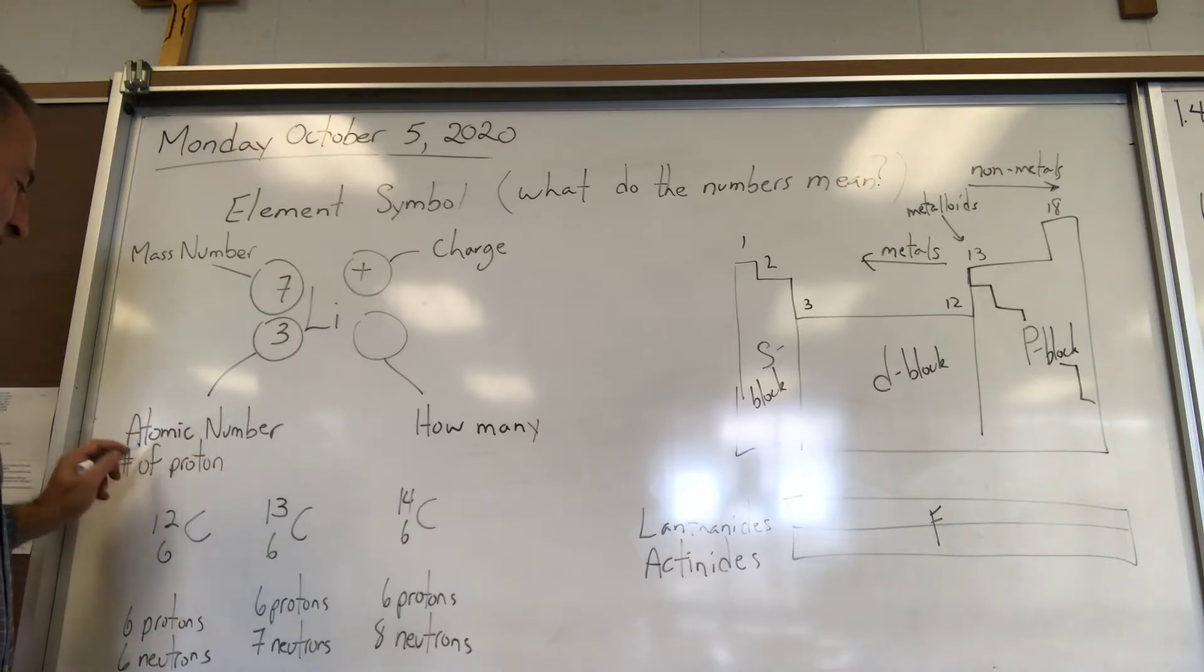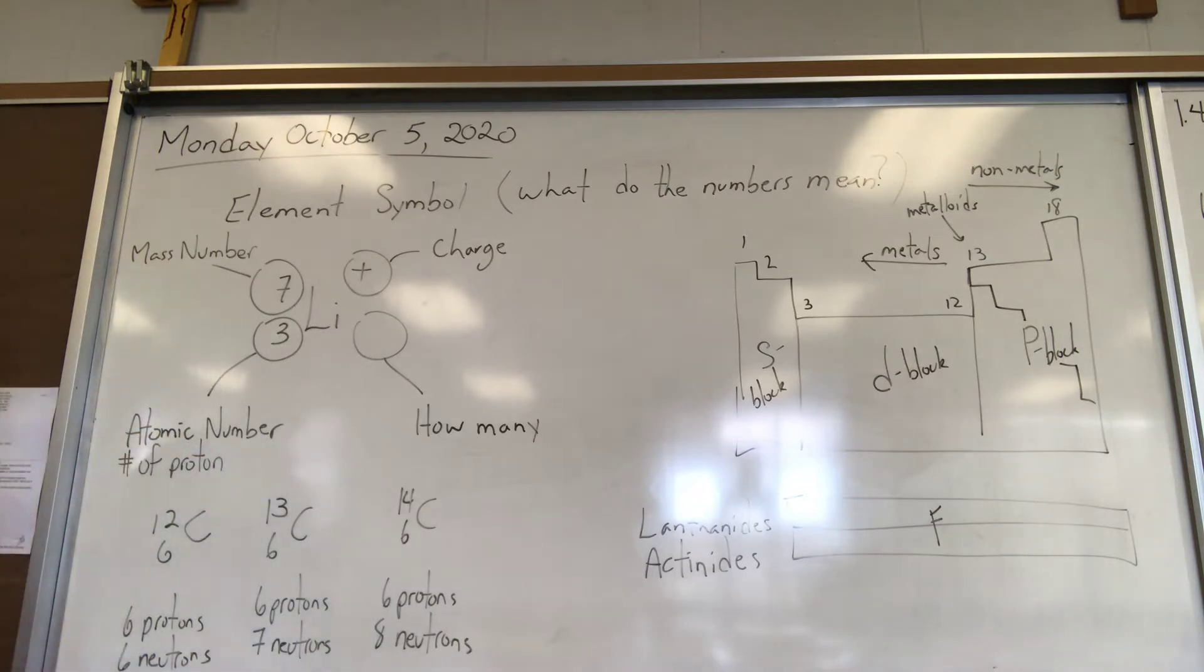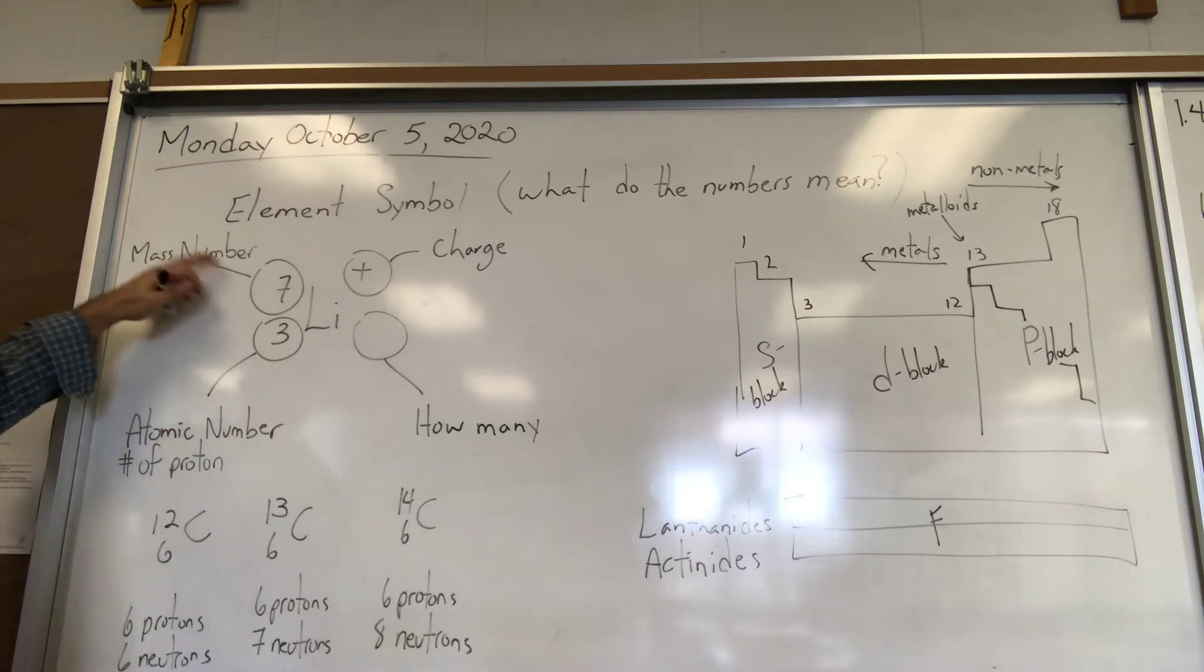The element identity is determined by the number of protons. If there's only one proton, it's a hydrogen atom. If there's two protons, it's helium. If it's got three protons, it's a lithium atom.